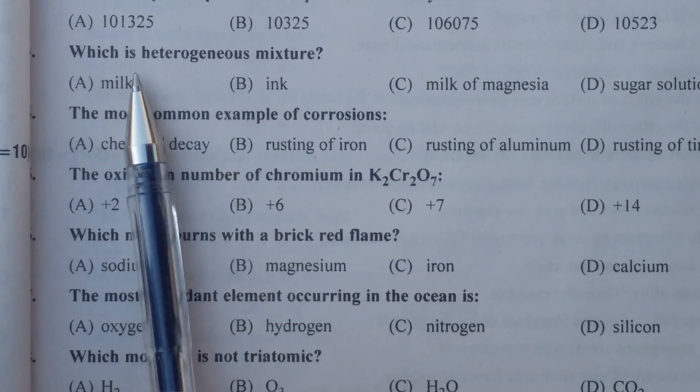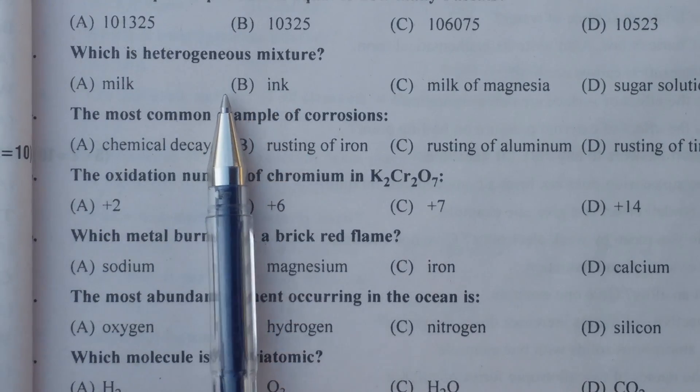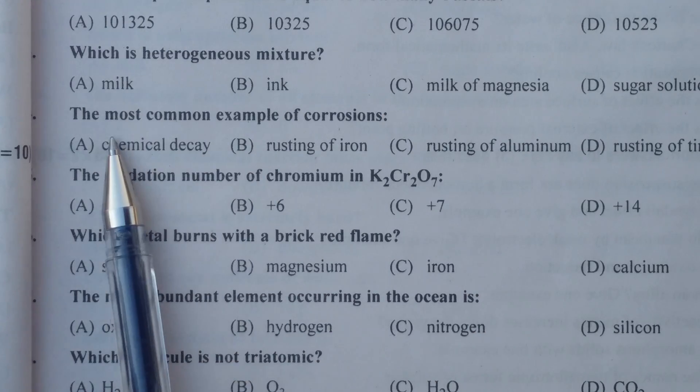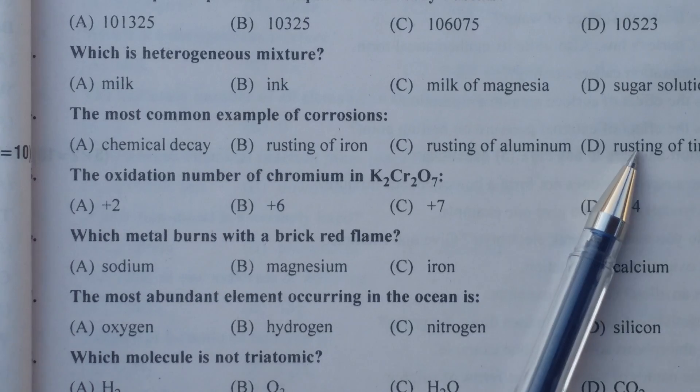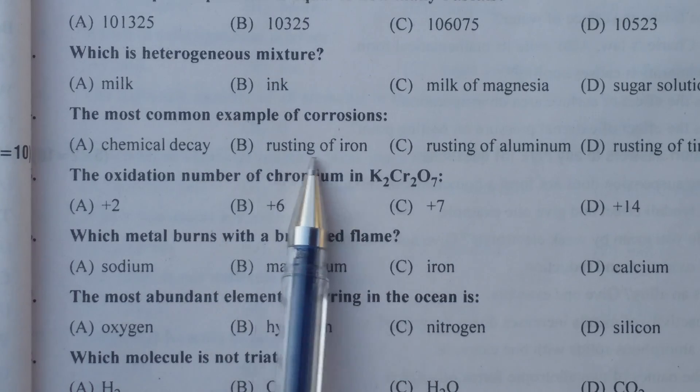Which is heterogeneous mixture? Milk of magnesia. The most common example of corrosion is rusting of iron.